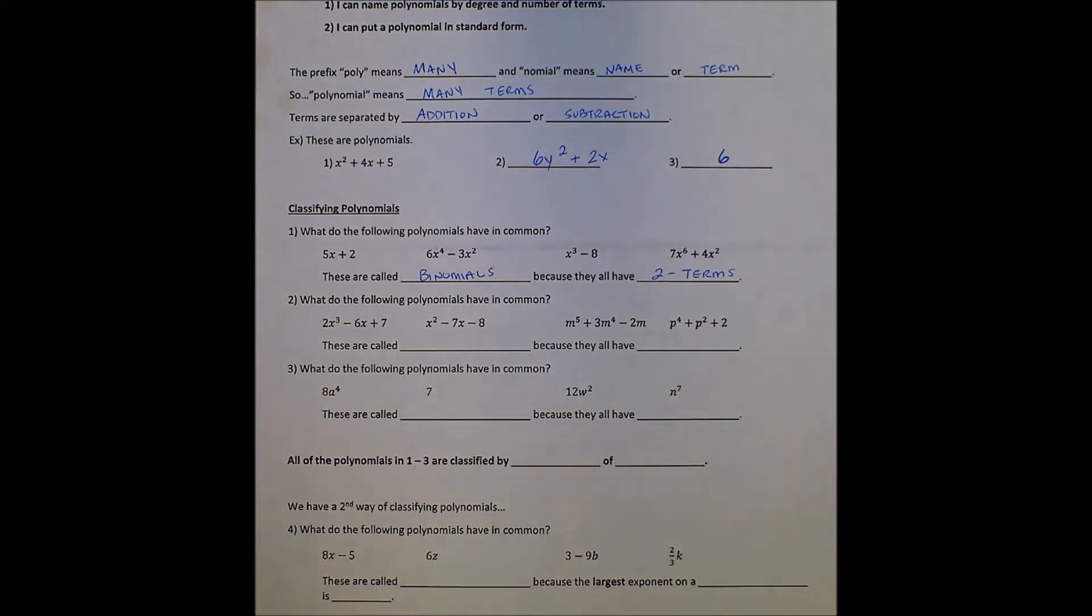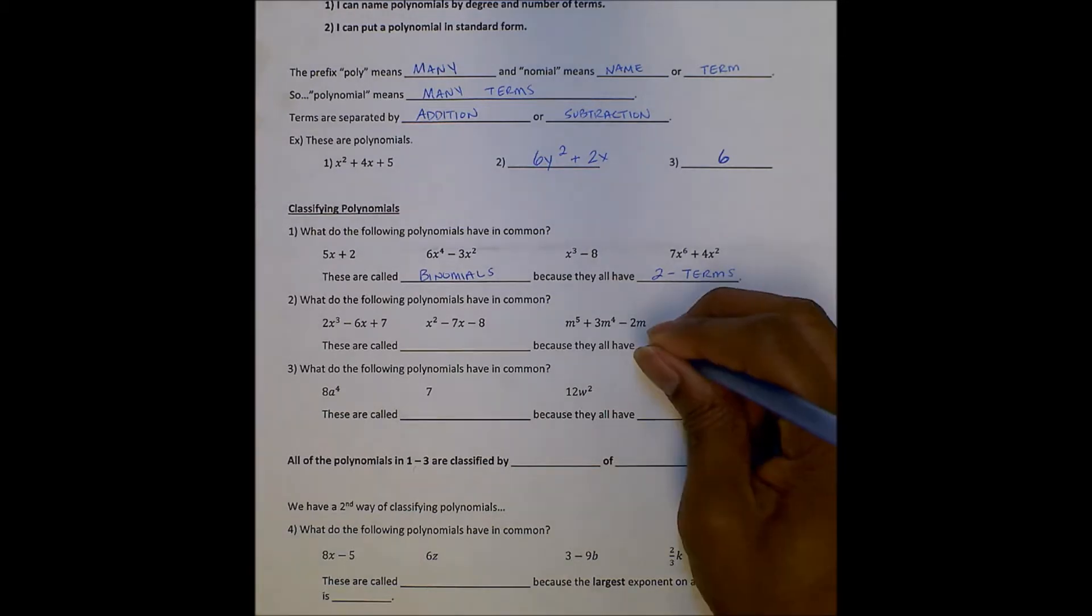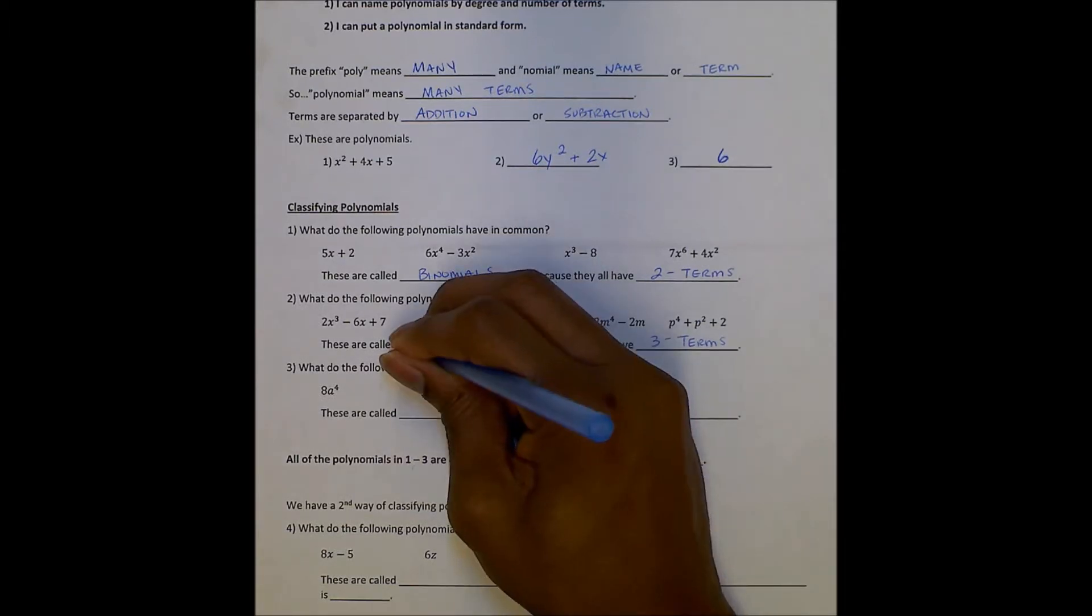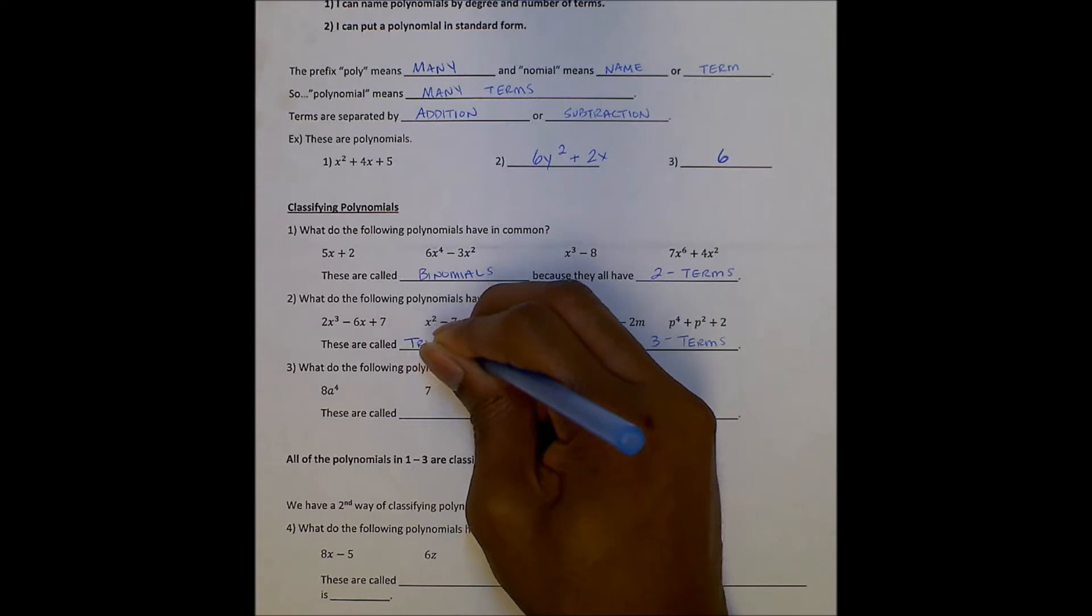Looking at the next set of polynomials, what do these polynomials have in common? Well, they have three terms. So we call polynomials with three terms trinomials. Tricycle, triangle, triple.